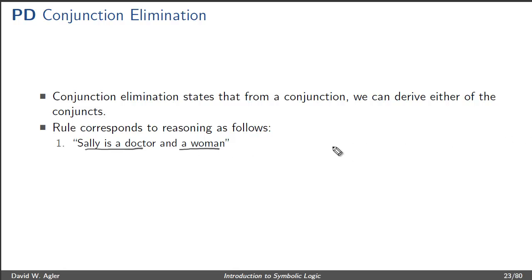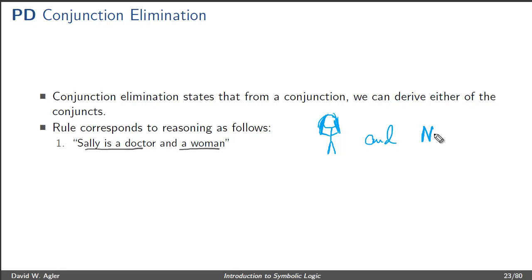We can express this with a little picture here. Here is Sally — we are going to say that she is a woman, so I'm just going to put a bunch of hair on her right here. And she is a doctor, so let's write that with MD. Now conjunction elimination states that if this sentence is true — Sally is a doctor and a woman — then we can reason on a new line.